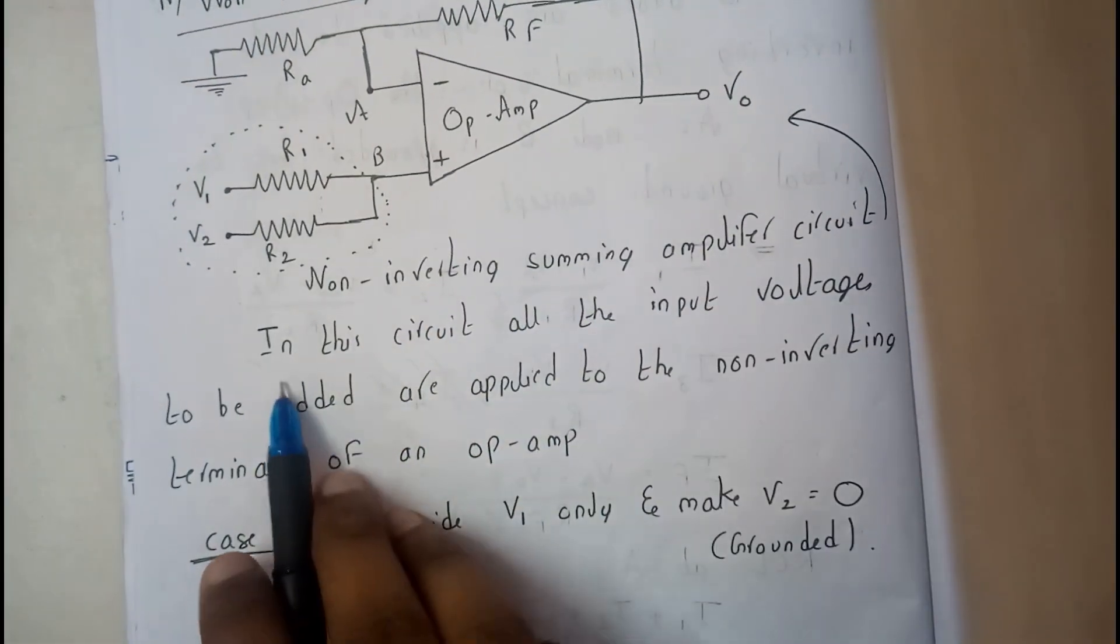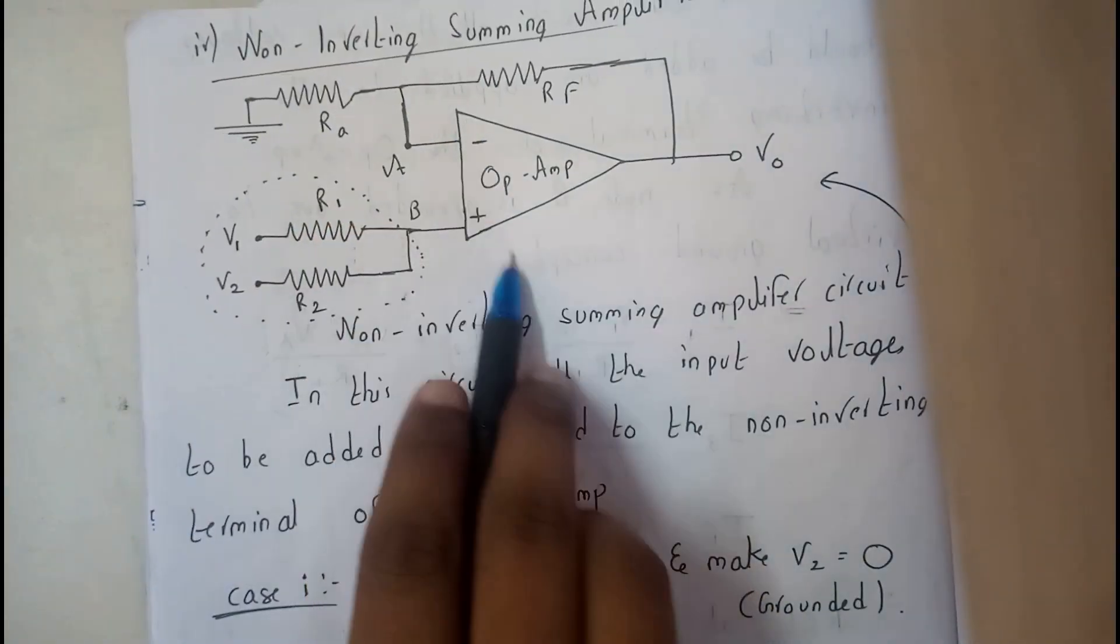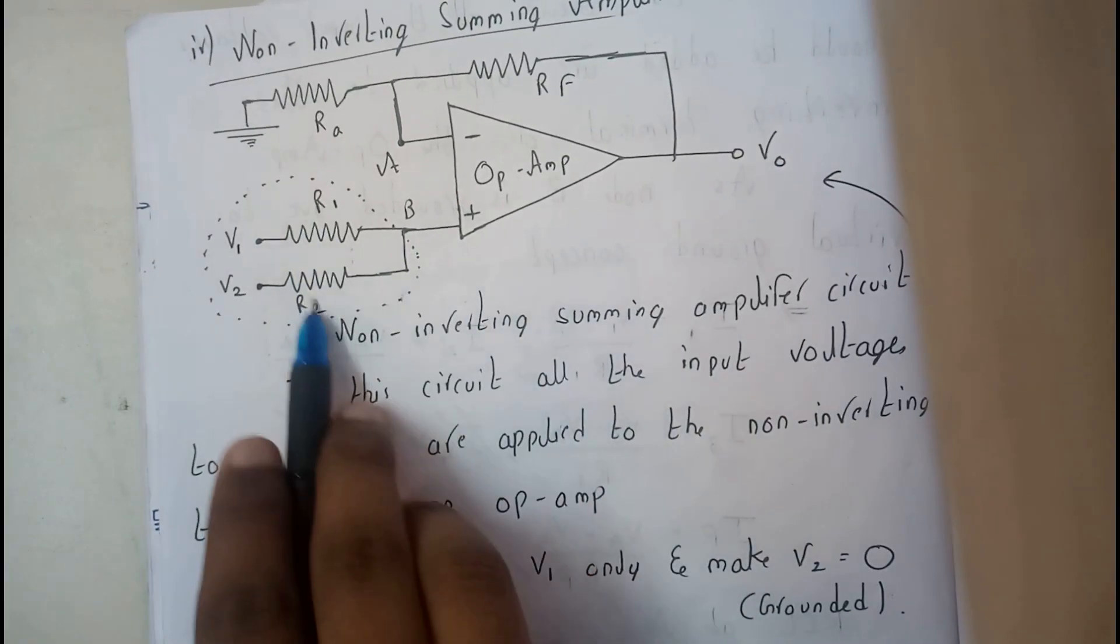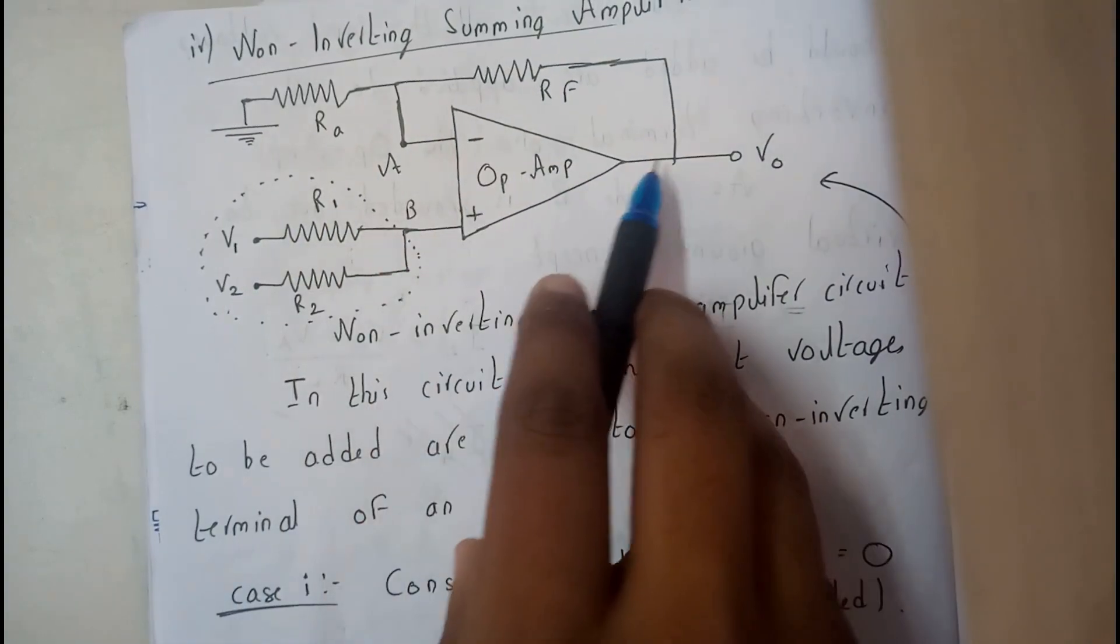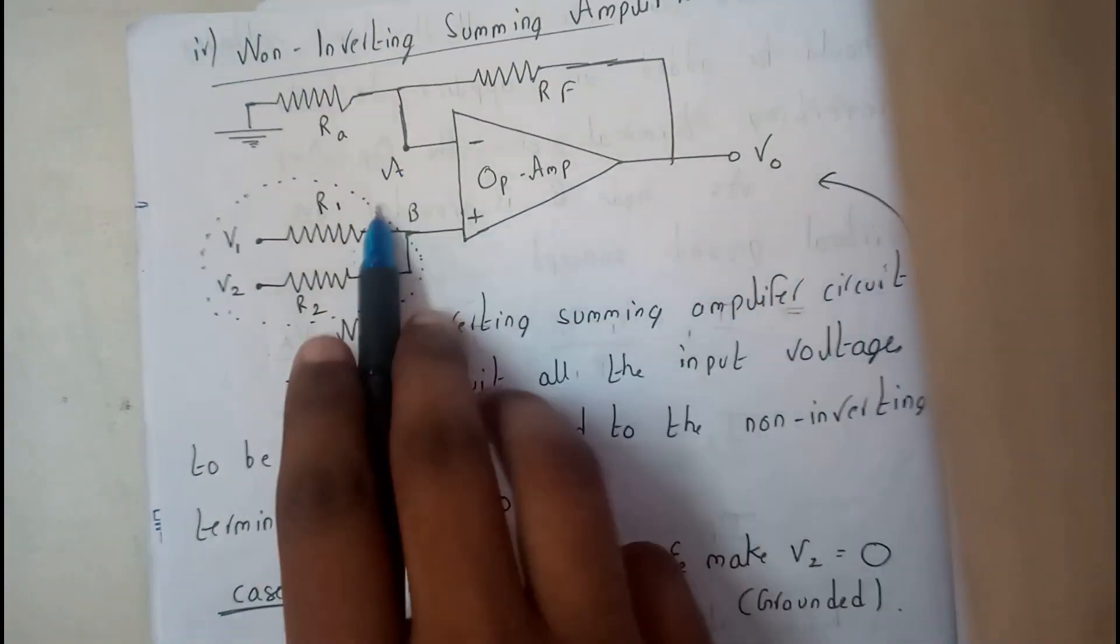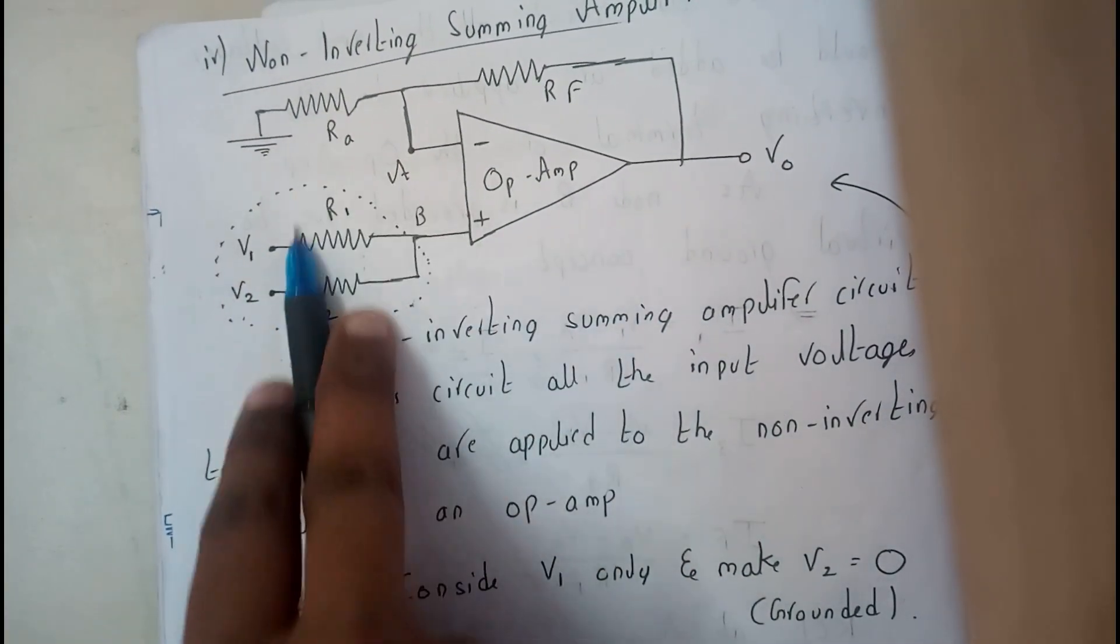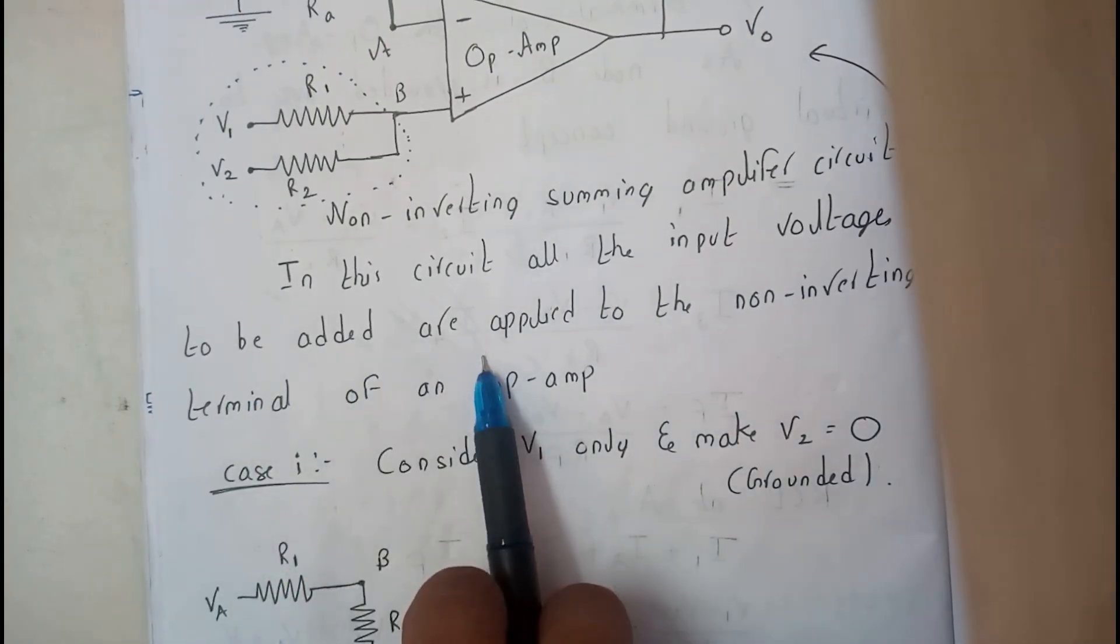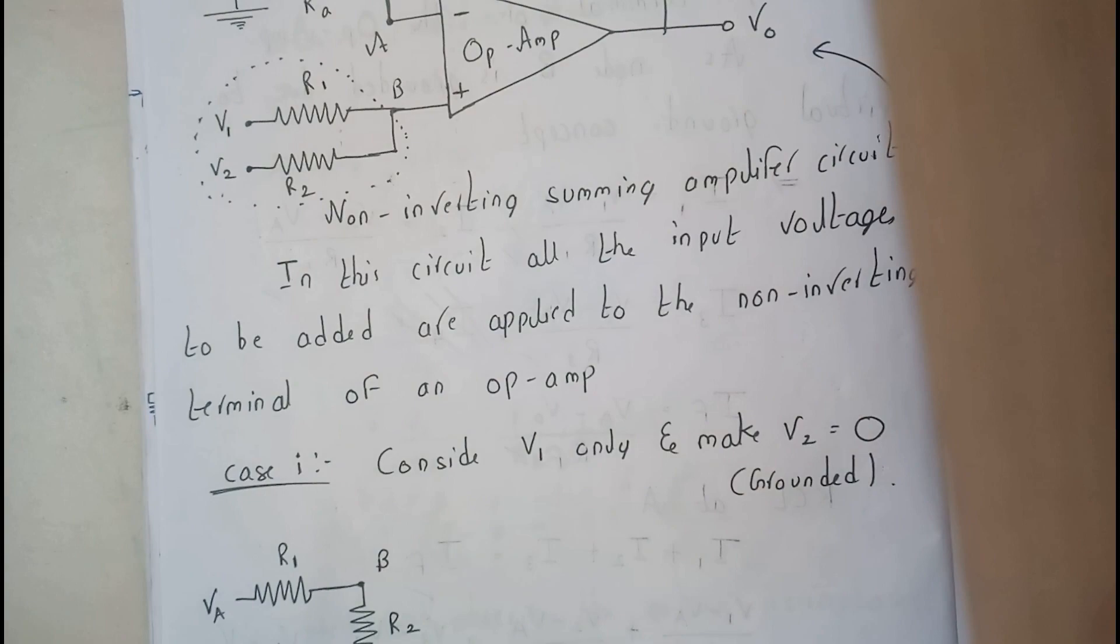Non-inverting summing amplifier circuit is the above diagram. Here we are having an operational amplifier in which on the non-inverting terminal we are adding these two voltages V1 plus V2, and the feedback is given to the inverting terminal and there is a resistor RA in series with that. In this circuit all the input voltages to be added are applied to the non-inverting terminal.